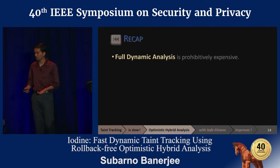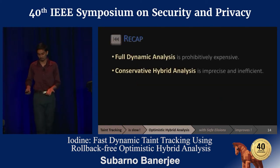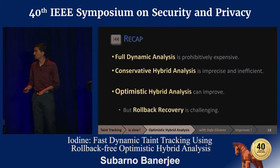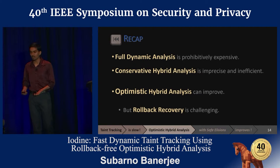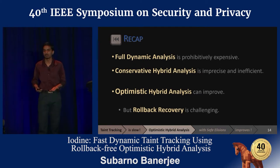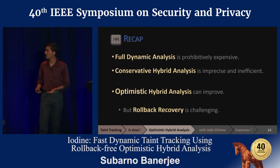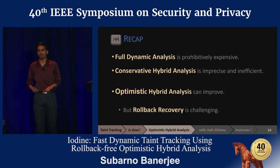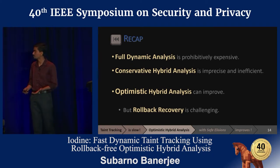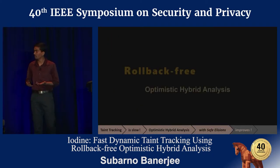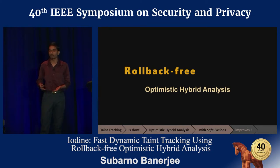To recap: pure dynamic monitoring is obviously very expensive. Conservative hybrid analysis is imprecise and therefore inefficient. Optimistic hybrid analysis improves precision by assuming likely program invariants. But rollback in case an invariant is violated remains challenging for live production systems. So we need to eliminate rollbacks in order to apply OHA to live systems.